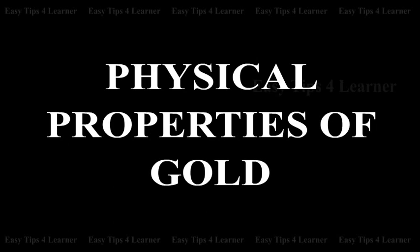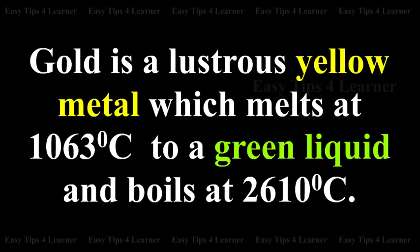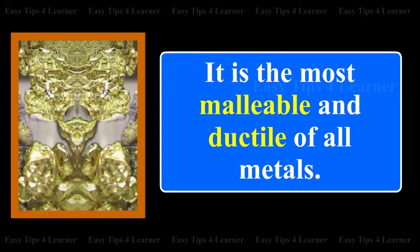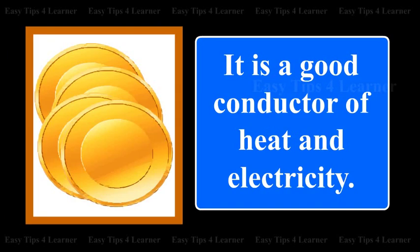Physical properties of gold: Gold is a lustrous yellow metal which melts at 1063°C to a green liquid and boils at 2610°C. It is the most malleable and ductile of all metals, and is a good conductor of heat and electricity.